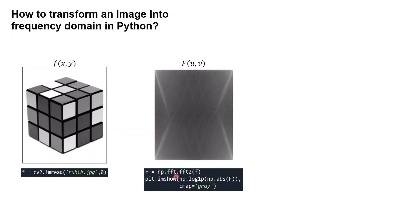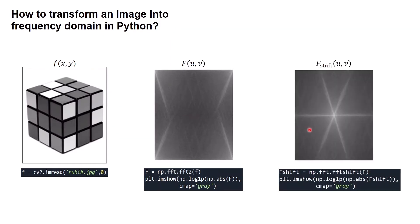If you want to display it as a power spectrum, you need to calculate the absolute value and then take the log using a NumPy function. This image tells us that the low frequency is located in the corners. The high frequency is located in the center. Usually, we shift the low frequency into the center. We can do that using NumPy's function np.fft.fftshift.